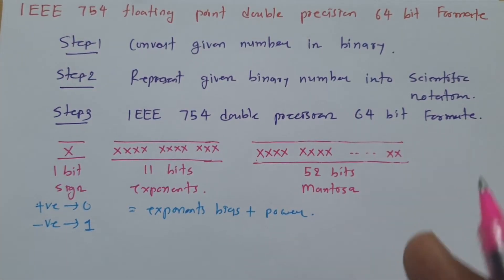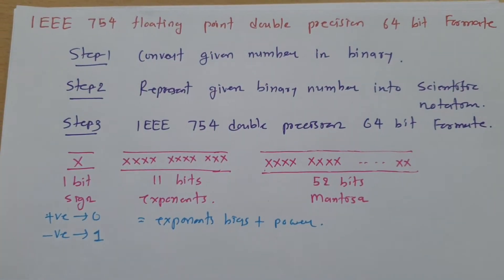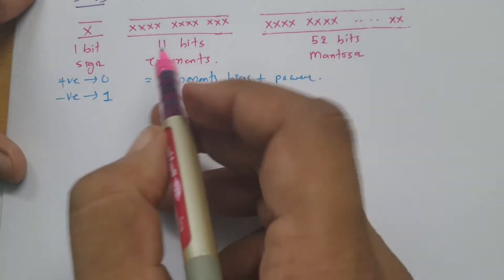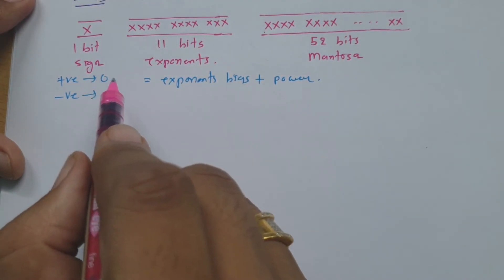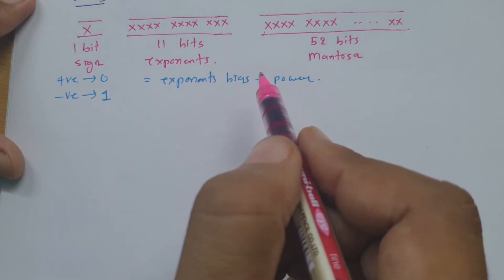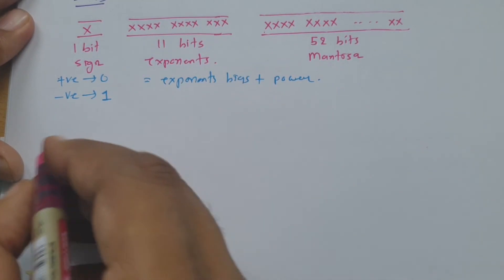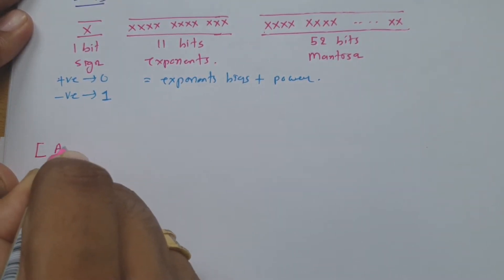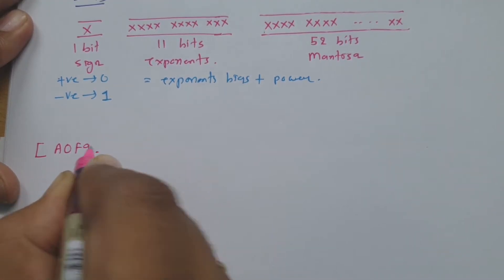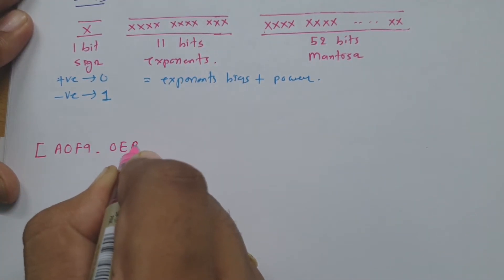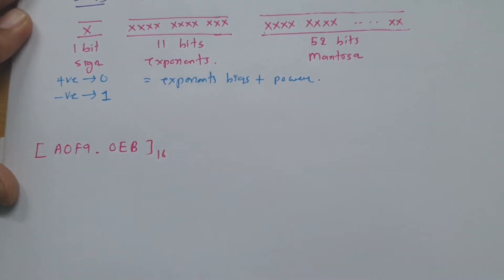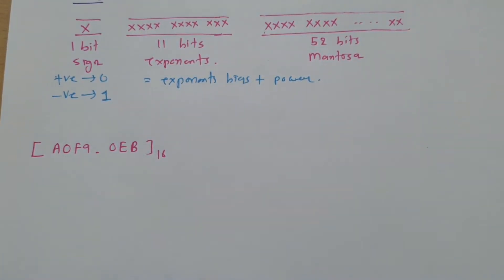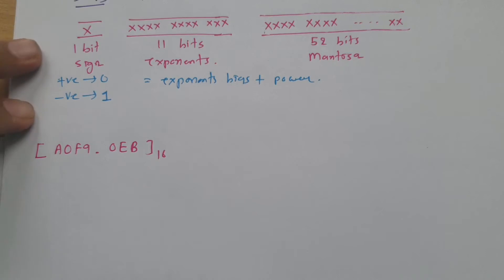Let me give you one example to show how to solve this. The problem is A0F9.0EB in hexadecimal, and we are required to convert this data into IEEE 754 Floating Point Double Precision 64-bit Format.